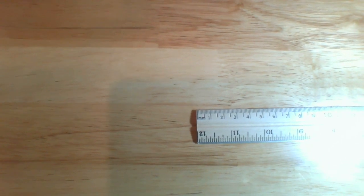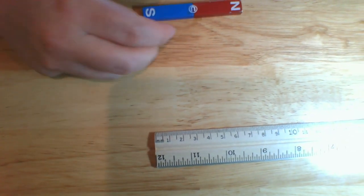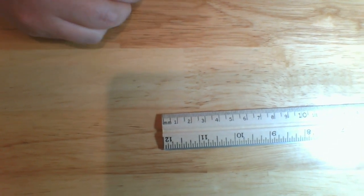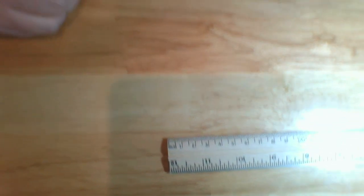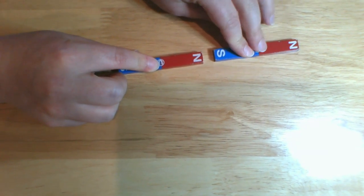This video is for System 2 lab. In this system, we have two bar magnets. I'm going to align these magnets so that the north pole of this magnet is close to the south pole of this magnet.